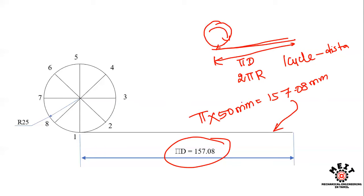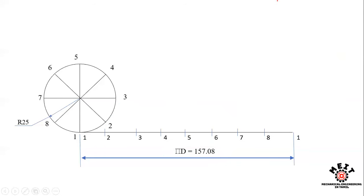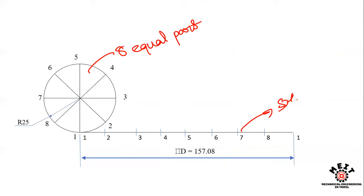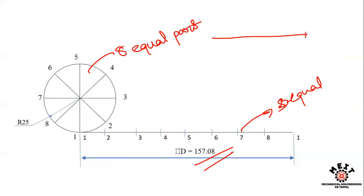We need to divide this baseline of 157.08mm into 8 equal parts, just as we divided the circle into 8 parts. One simple method is to repeatedly halve the line: first divide by 2 to get two halves, then divide each half again by 2, and repeat until you have 8 equal parts.